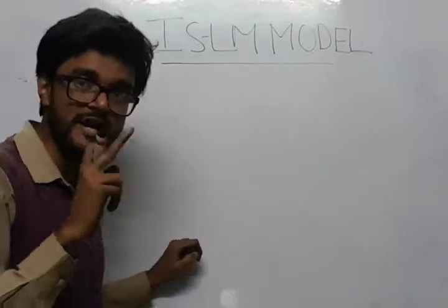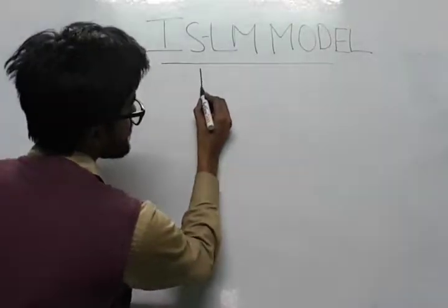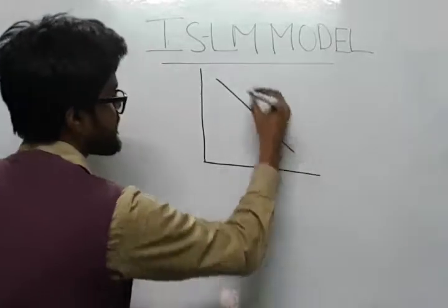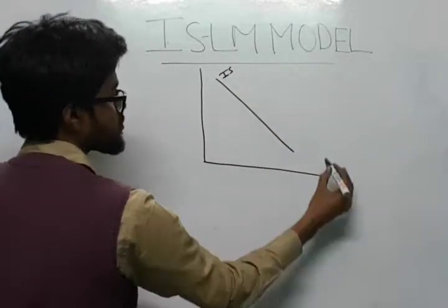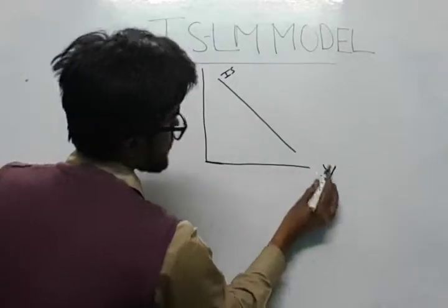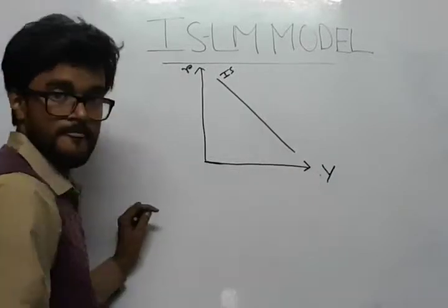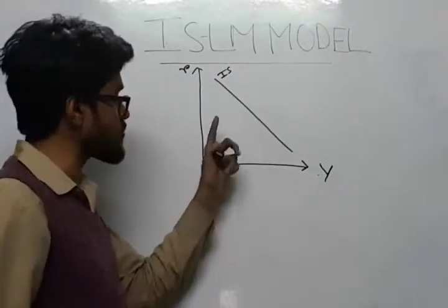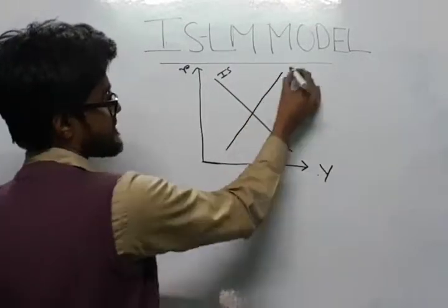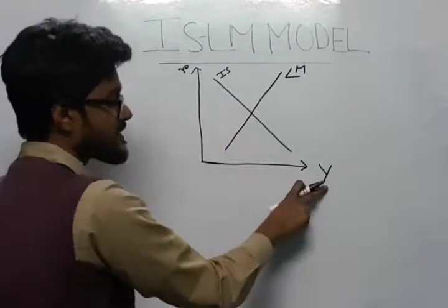First we will draw the IS-LM curves that we learned in the previous video. The IS curve is a downward sloping curve showing the relationship between income and interest rate. The LM curve is a positively sloped curve showing the positive relationship between rate of interest and Y. This is the money market equilibrium and this is goods market equilibrium.